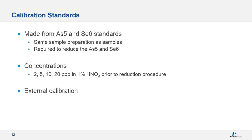Calibration standards were made exclusively from arsenic-5 and selenium-6 to ensure evaluation of the pre-reduction procedure, since neither will efficiently form hydrides on their own. Standards were prepared at 2, 5, 10, and 20 ppb in 1% nitric acid, then 10 mL of each standard was taken, combined with 10 mL HCl, heated at 100°C for 20 minutes, and diluted to 25 mL with deionized water. All measurements used external calibration.